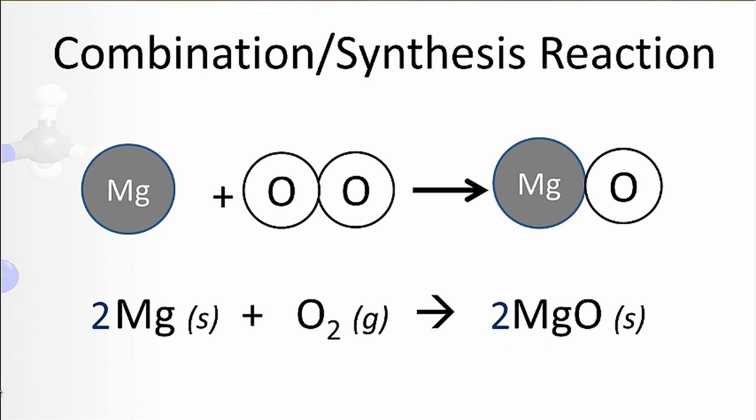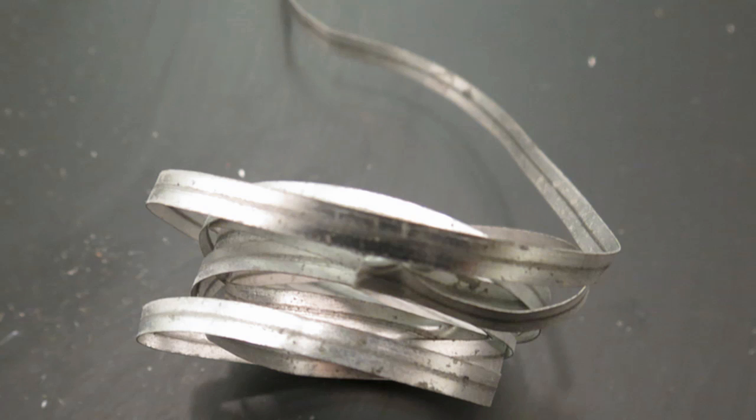And again, we'd balance this just to make sure that we obeyed the law of conservation of mass. So you can see here, we have a strip of magnesium metal, and we're going to ignite that in air. And when we do that, the Mg and the O2 in the air will combine to form a new compound, MgO. It will also give off quite a bit of light and heat at the same time.